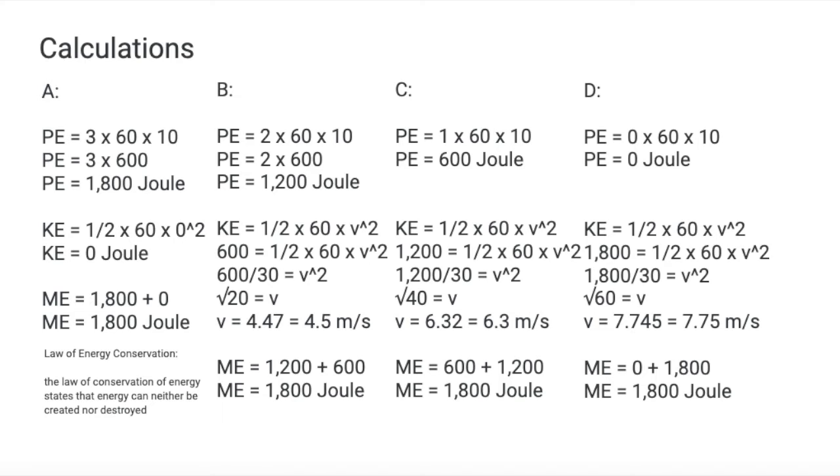Because ME equals PE plus KE, we can use this to our advantage to find the velocity in each other point. For example, in point B, we can use 1,800 from the mechanical energy and 1,200 from the potential energy by using the mass times height times gravity formula. We now know that the kinetic energy is 600. By doing some calculations, we are able to find the velocity like in the picture.